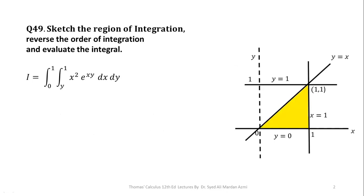In the next step, we have highlighted our region of integration with yellow color. After highlighting this region, we will discuss the meaning of reversal of order of integration. Reversal of order of integration means you have to interchange your inner and outer variables. For example, in this question, the inner variable is x and the outer variable is y, so we will interchange them to dy dx.